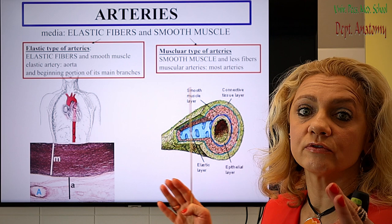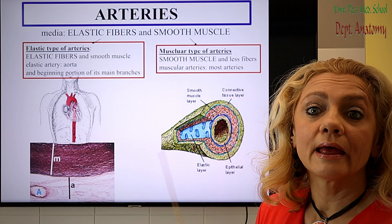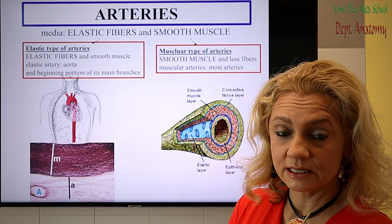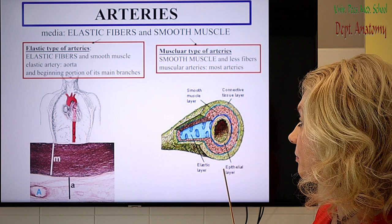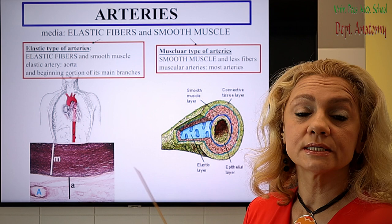Let's see the arteries first. Basically we have two main types: the elastic type and the muscular type. The elastic type is basically the aorta and the beginning portions of its main branches. As the name suggests, in the tunica media we have elastic fibers and smooth muscle cells — in the aorta, elastic fibers dominate, but smooth muscle is also present in the media. This is the slide you have already seen when you studied elastic fibers, stained with Orcein — the specific staining for elastic fibers — and you can see many, many layers of elastic fibers.